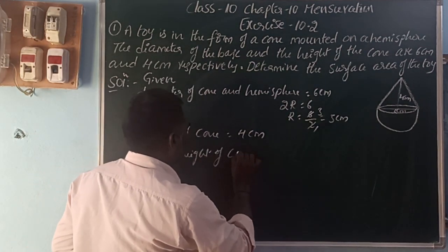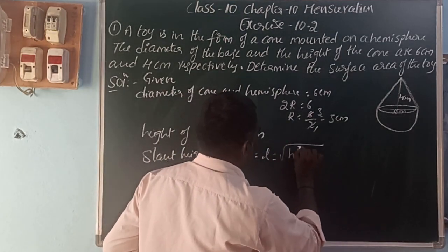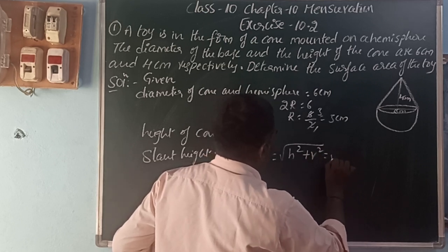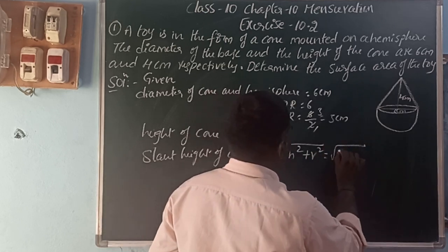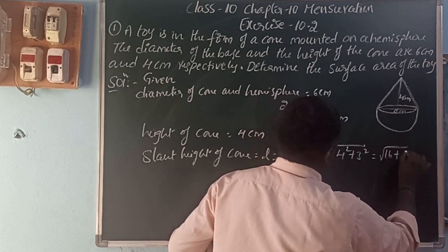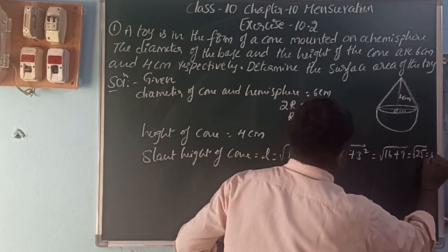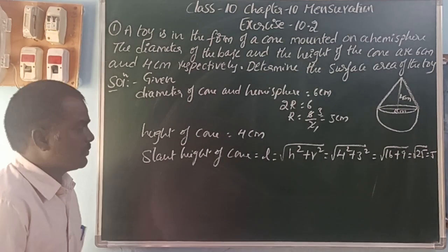Slant height of cone l equals square root of h² plus r². That equals square root of 4² plus 3². 4 square is 16 plus 3 square is 9, 16 plus 9 equals 25. Square root of 25 is 5.